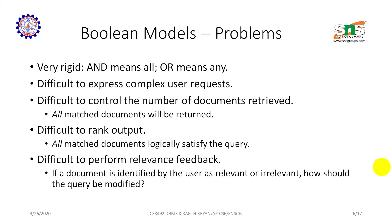Boolean model problems: it is very rigid — AND means all, OR means any. It is difficult to express complex user requests, and difficult to control the number of documents retrieved, since all matching documents will be returned. It is difficult to rank output, as all matching documents logically satisfy the query equally. It is also difficult to perform relevance feedback — if a document is identified by a user as relevant or irrelevant, how should the query be modified?